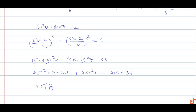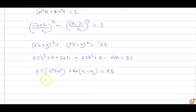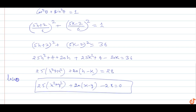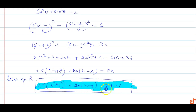Simplifying: 25h² + 25k² + 20h − 20k + 8 − 36 = 0, which gives 25h² + 25k² + 20h − 20k − 28 = 0. So the locus of R is 25(x² + y²) + 20(x − y) − 28 = 0.